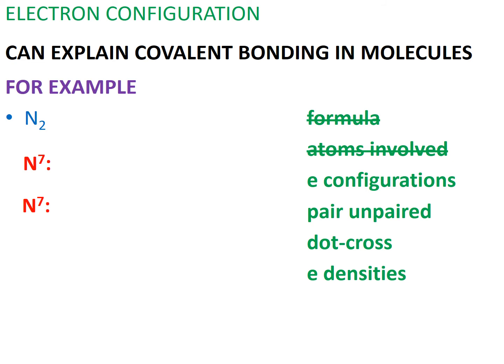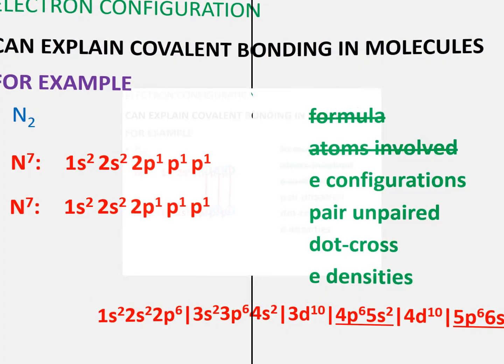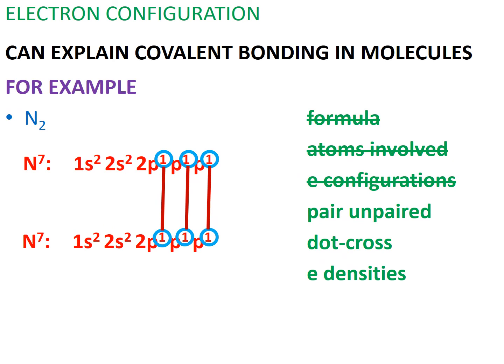Before we write out their electron configurations, we need to know how many electrons each of these elements contain. Each nitrogen atom has seven electrons: two electrons in a 1s orbital, two electrons in a 2s orbital. Then, using Hund's rule, place three electrons singly occupying the three orbitals of 2p. Since there is no central atom, to find out the number of covalent bonds between these two atoms, simply draw lines pairing up the unpaired electrons, where each pairing represents a covalent bond.